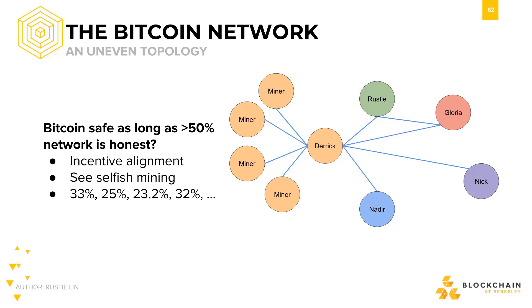And scarier yet, Derek doesn't even need 50% of the network hash power. As we saw with the attacks and defenses previously, Bitcoin suffers from some incentive alignment problems, especially in the case of selfish mining. The Bitcoin network could be in jeopardy if Derek's pool, or pools, had 33% of the network hash rate, or 25%, or 23.2%, or 32%. Perhaps there is an attack or selfish mining scheme that hasn't been discovered yet that lowers the profit threshold even lower.